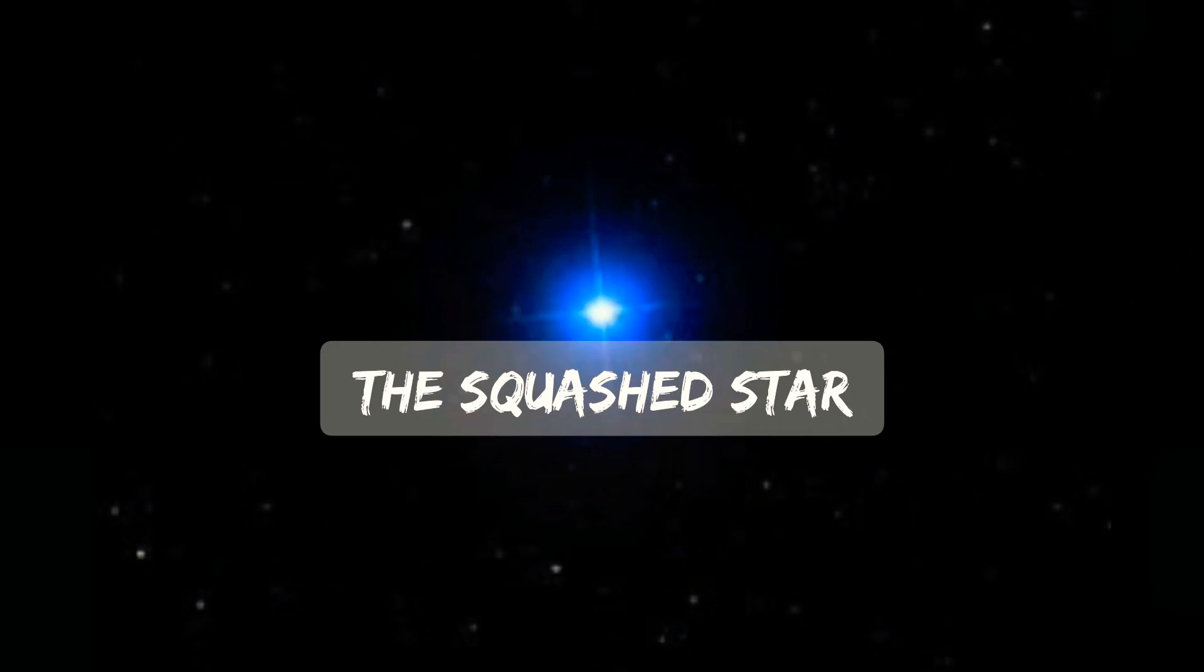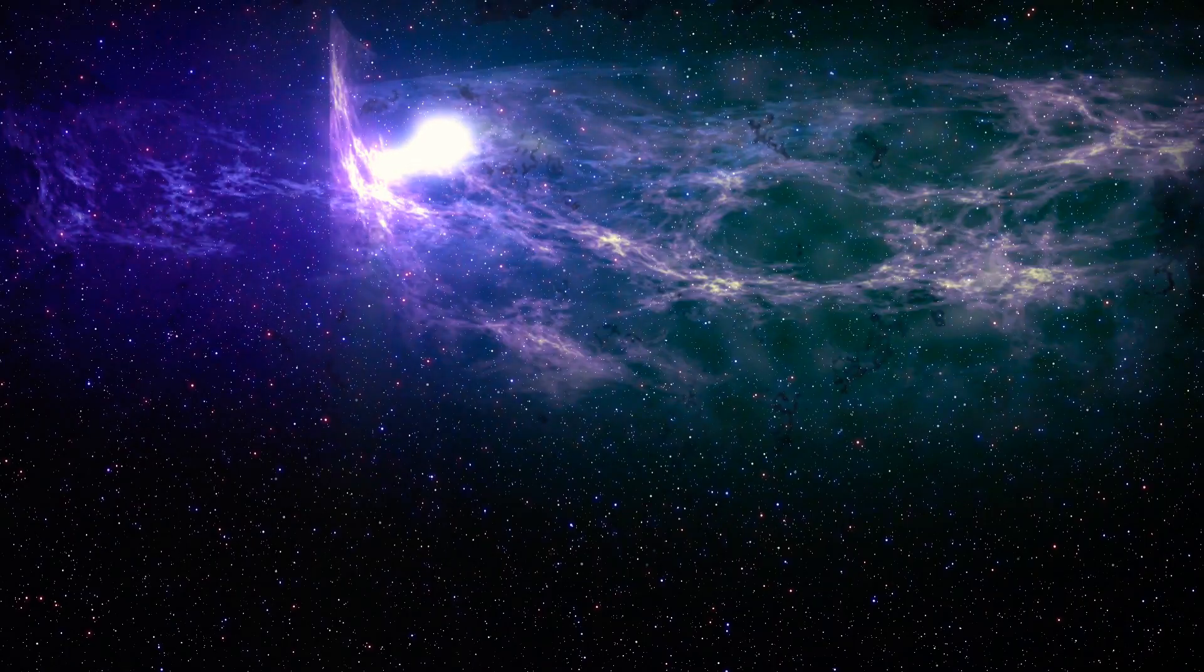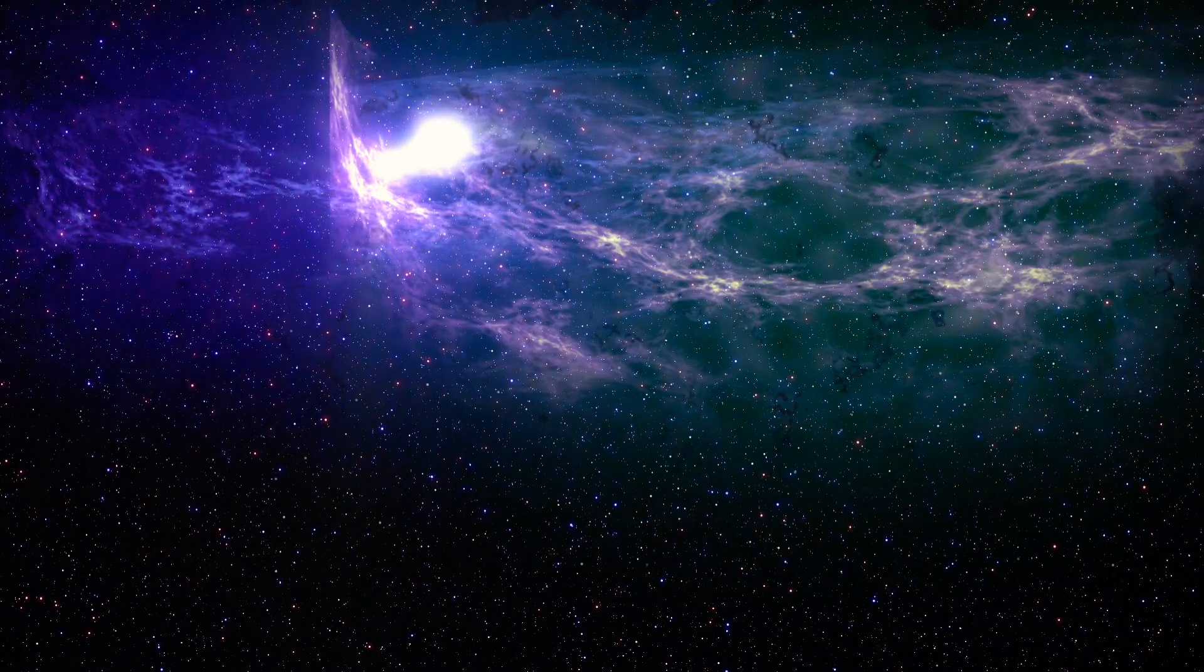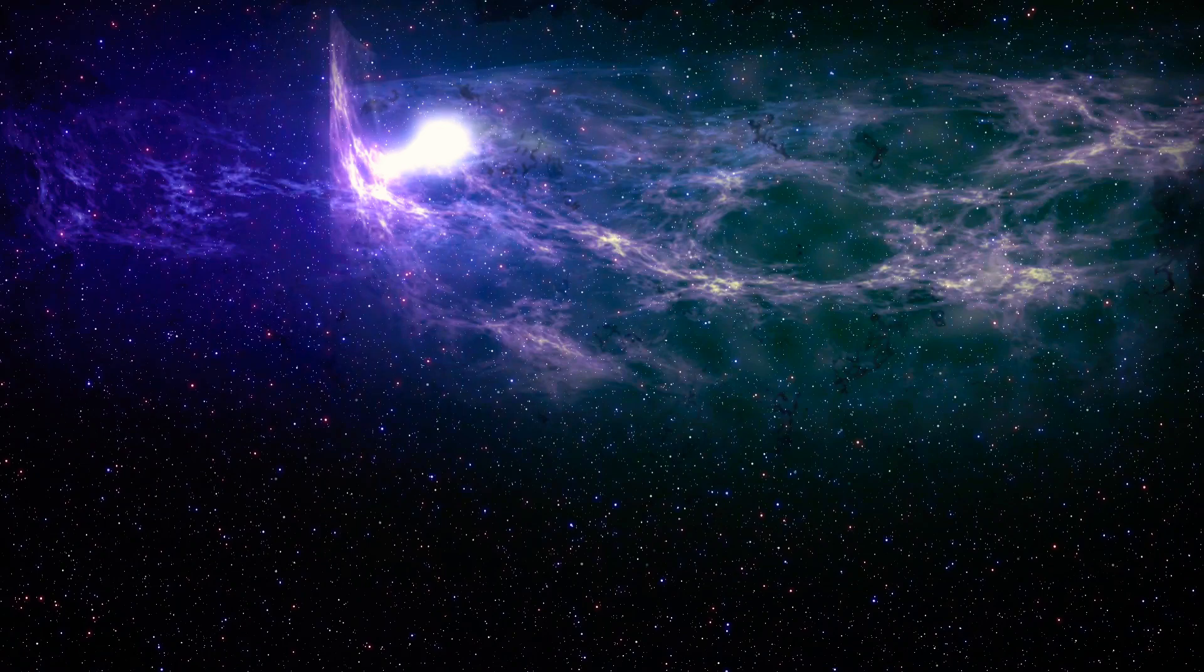A squashed star. The star Vega is a familiar sight to any astronomer in the northern hemisphere. But if we got to see the bright star from a different angle, we'd have a very different view. Star Vega has a weird characteristic shape, looks like squash.